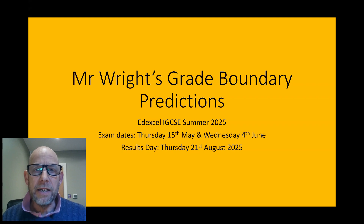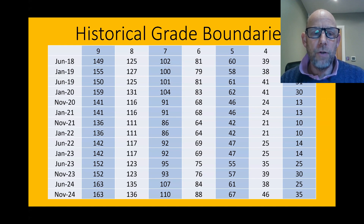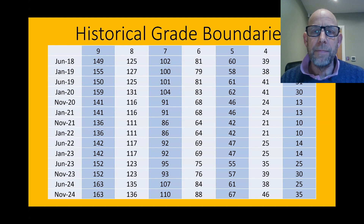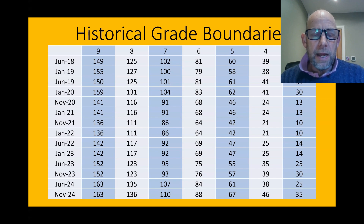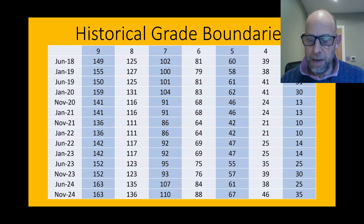Let's have a look at historically what the grade boundaries have been. You can see in the table how the grade boundaries have varied for each particular grade from the first set of results in June 2018 all the way through to November 2024. Look at your target grade and see what total marks out of 200 students have needed — but be aware there's some variation through the years, which can be quite misleading.